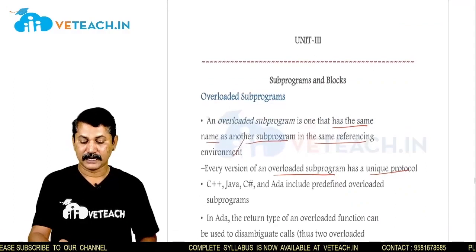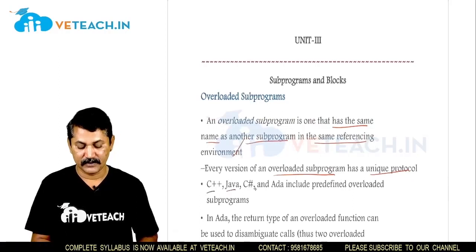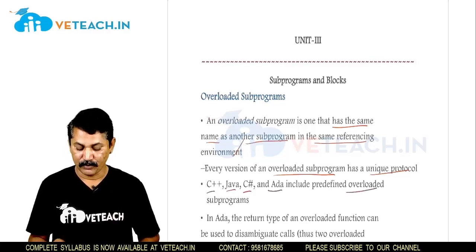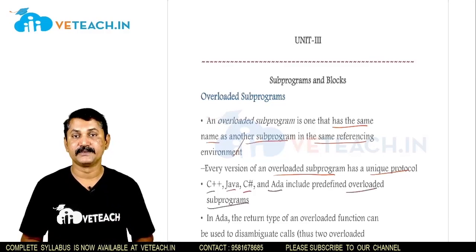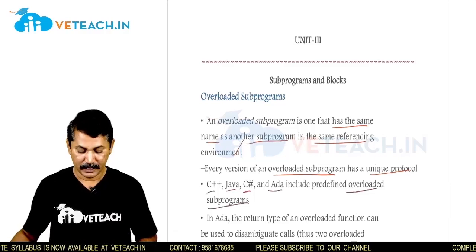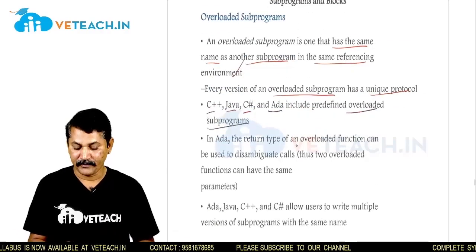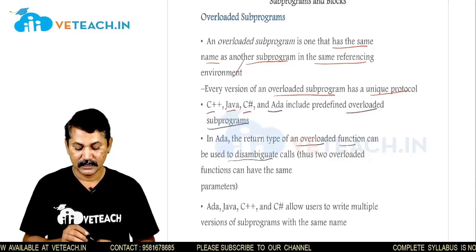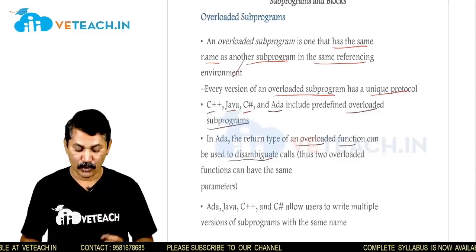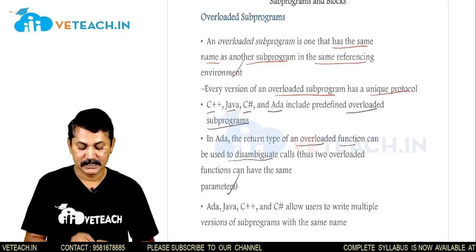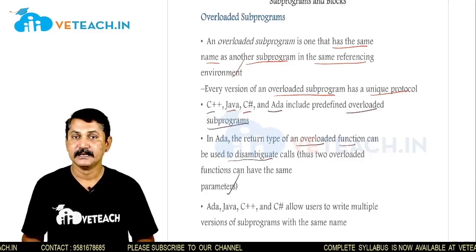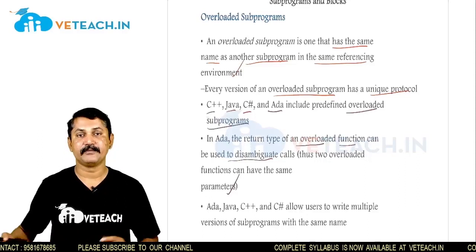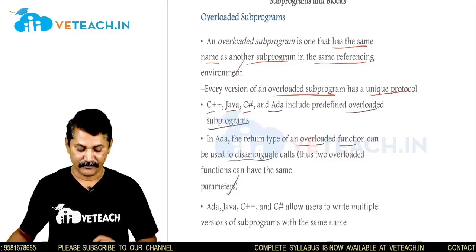Languages like C++, Java, C# and ADA include predefined overloaded subprograms having the same referencing name. In ADA, the return type of an overloaded function can be used to disambiguate calls. Thus two overloaded functions can have the same parameters — they share the same name and the parameters can also be shared among the same functions.